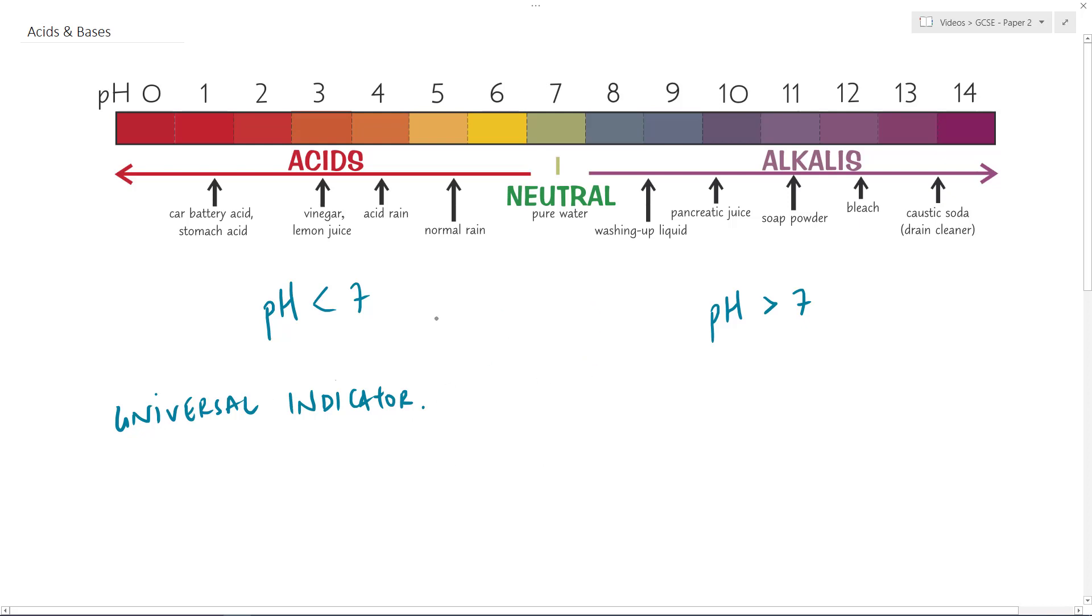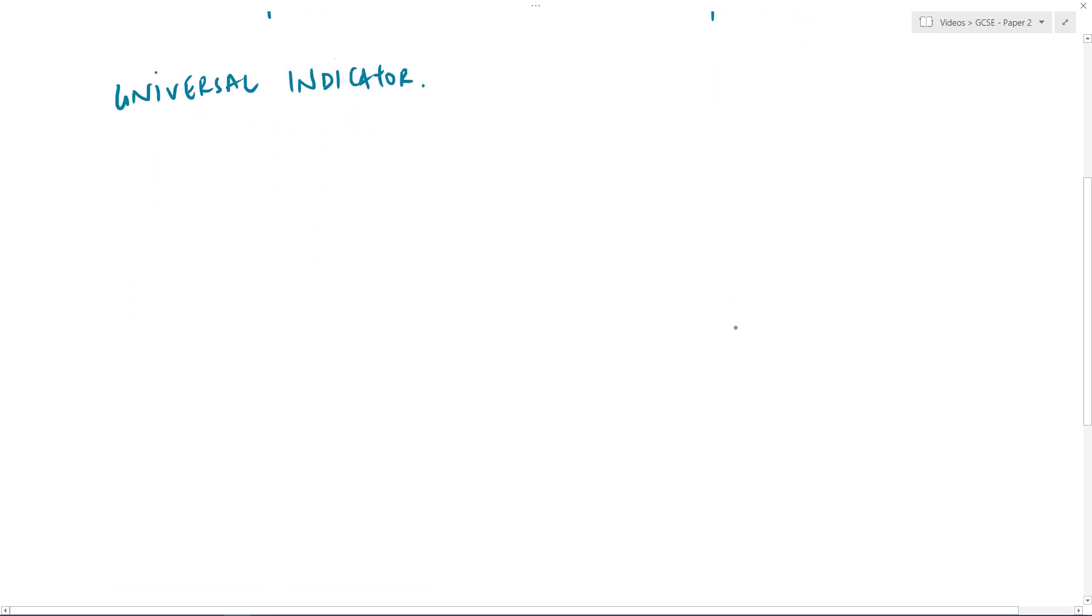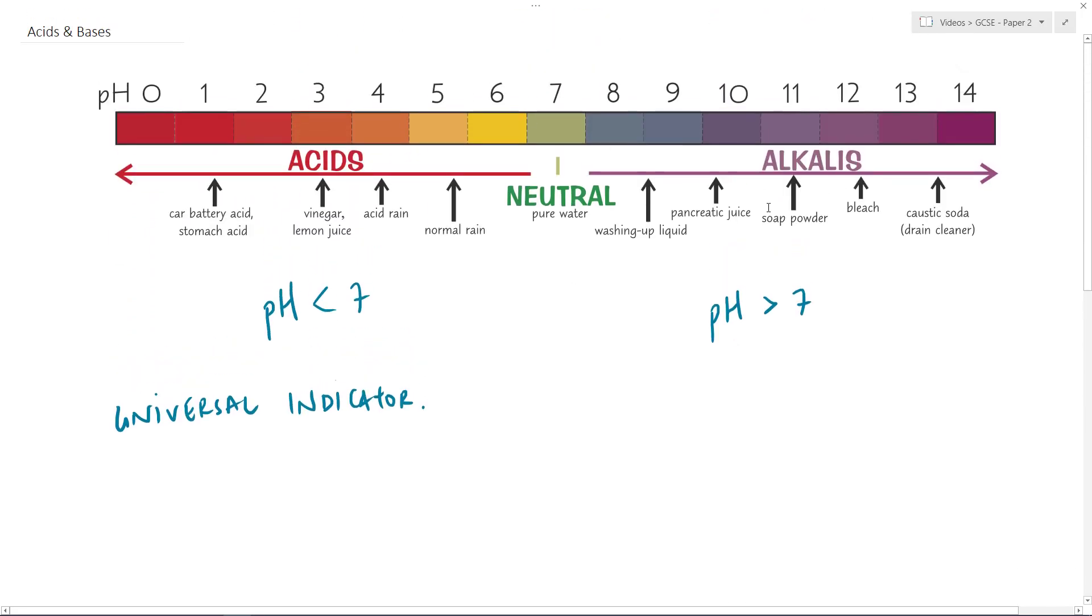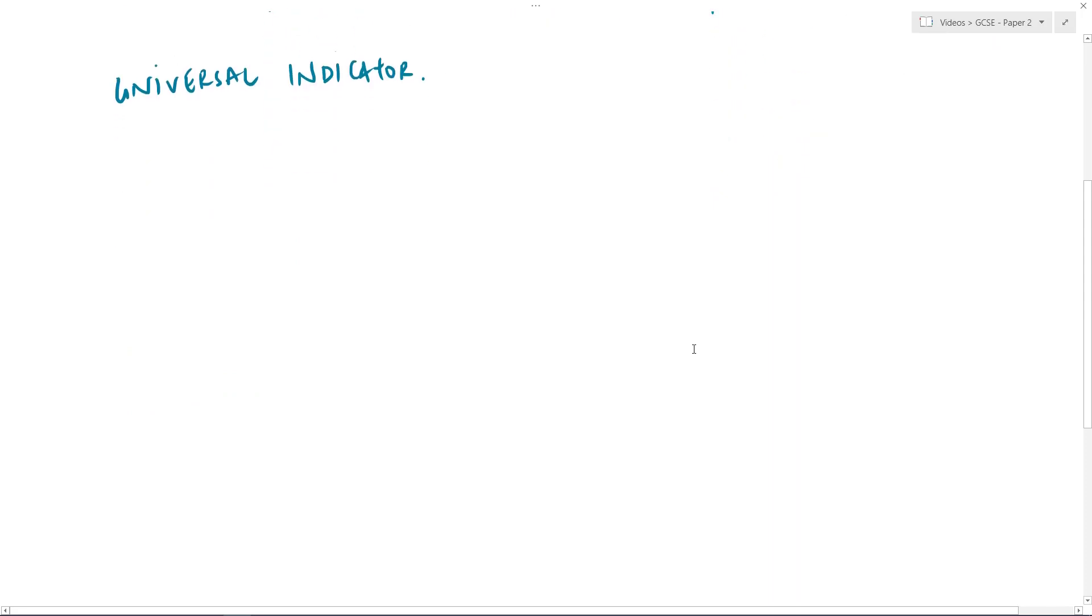Much more accurate but a little bit more tricky to use. Universal indicator is very easy: drop it in, look at the color and you will get a rough idea of whether it is acid or alkali. So now hopefully we know that acids and alkalis go from a pH of 0 through to 14. They can exceed these extremes but that is generally what we would say. But what actually are they?